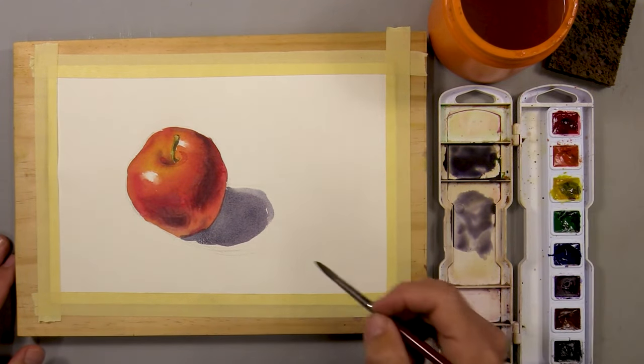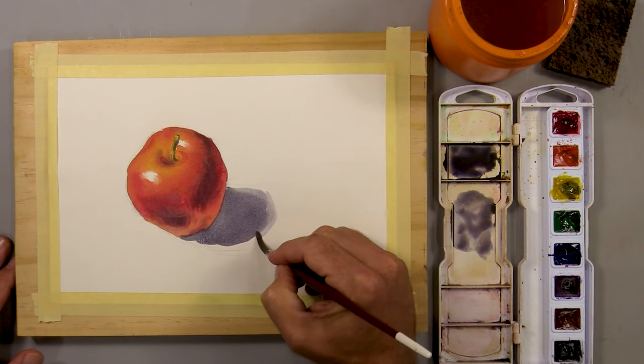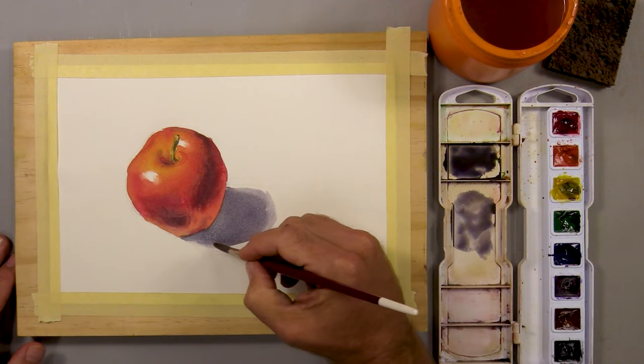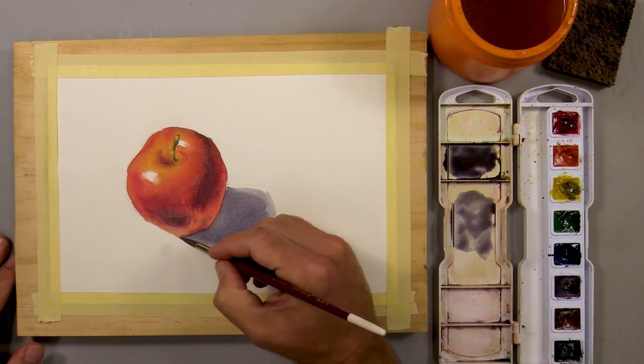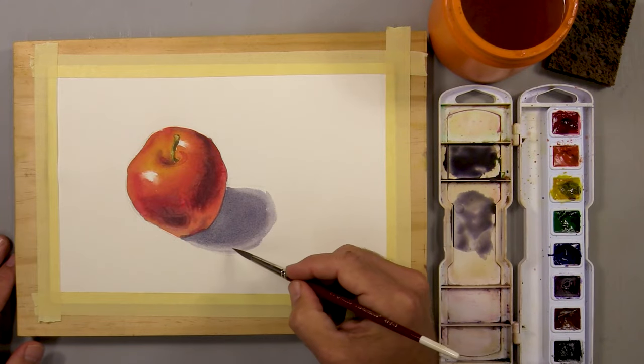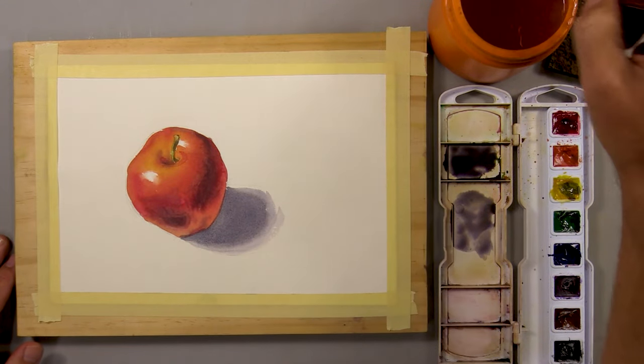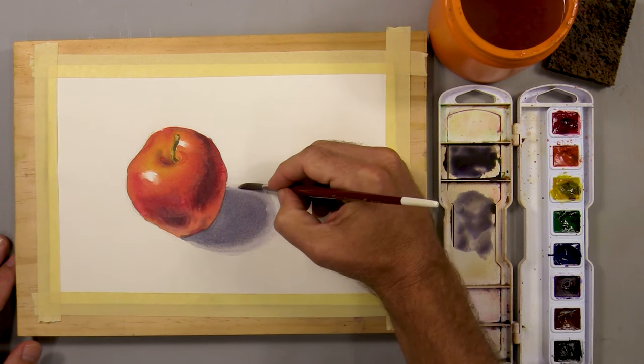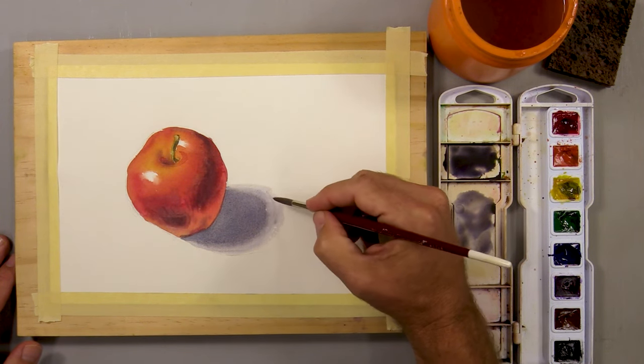Now I clean off my brush, dab it on the sponge so it's not completely dry and I soften the outer edge of the cast shadow. I do this a couple of times so that I have a nice soft transition from dark to light.